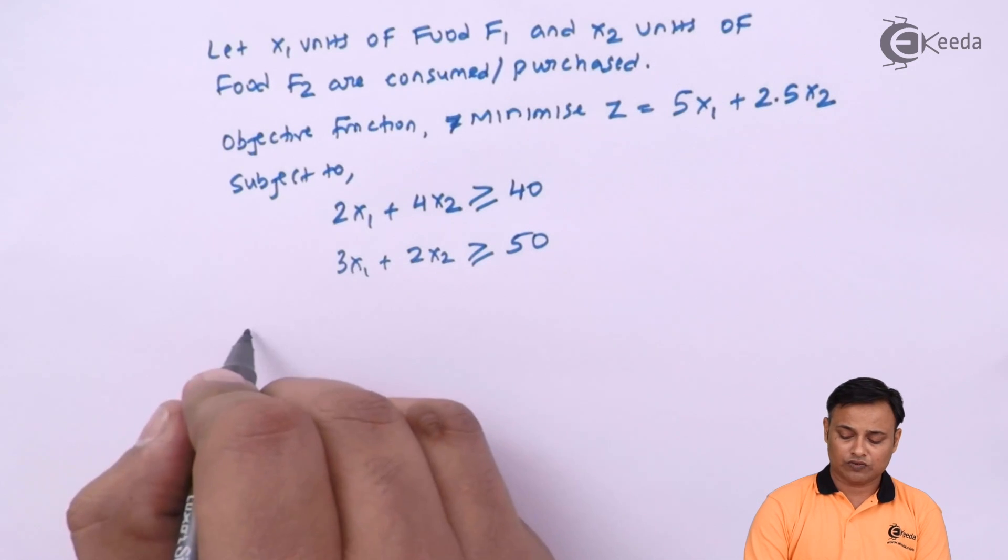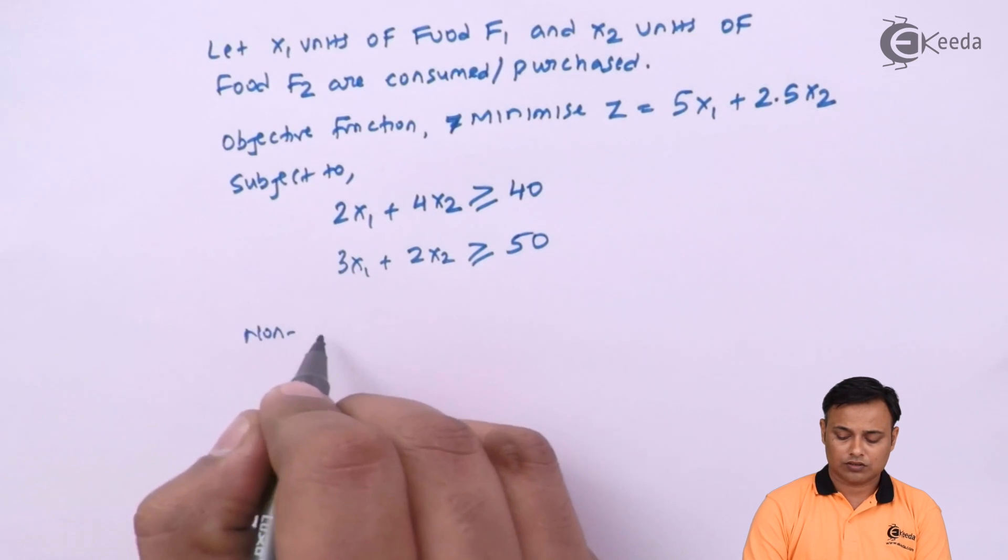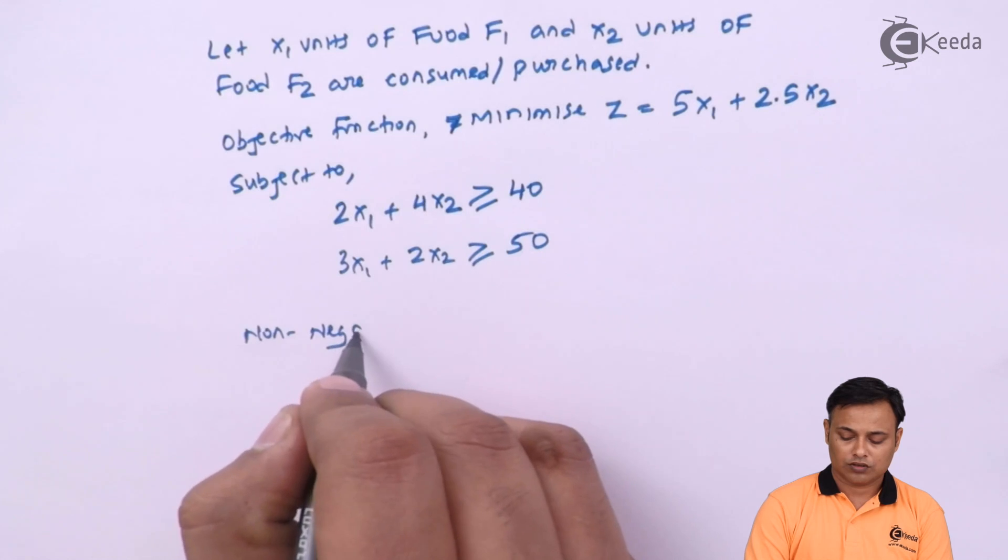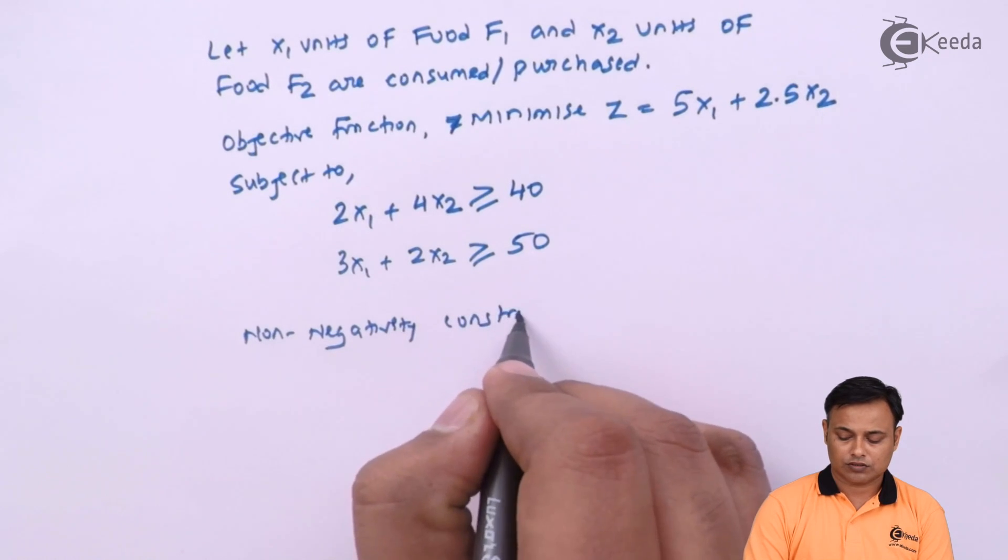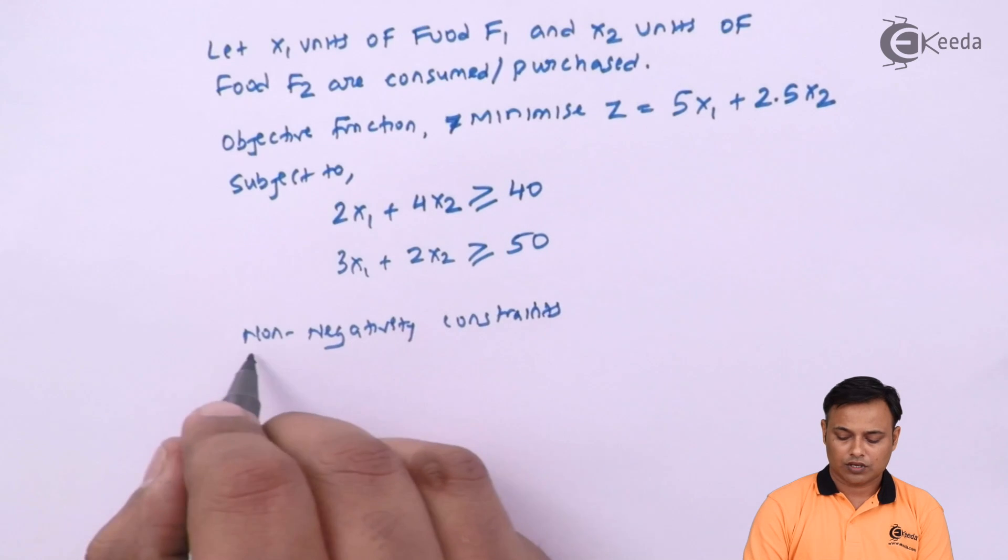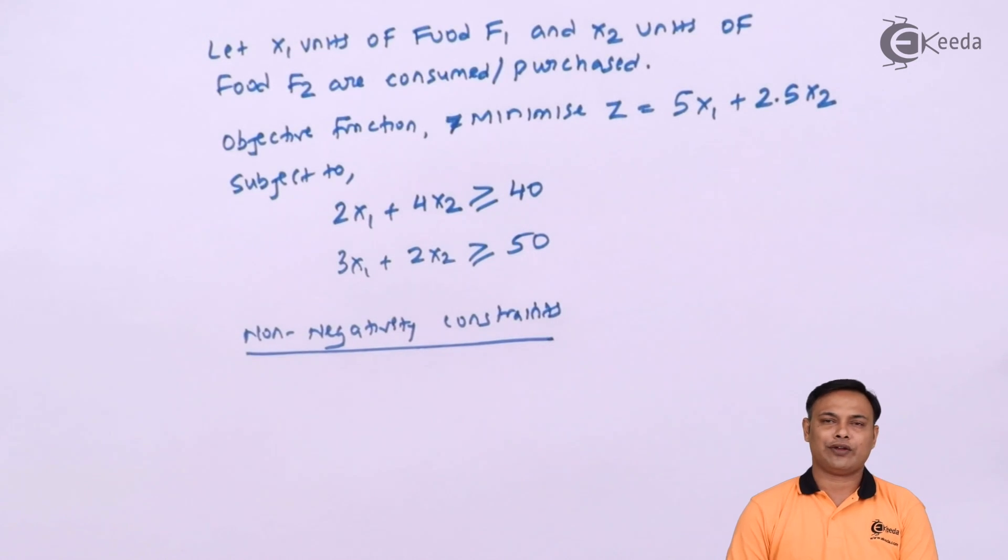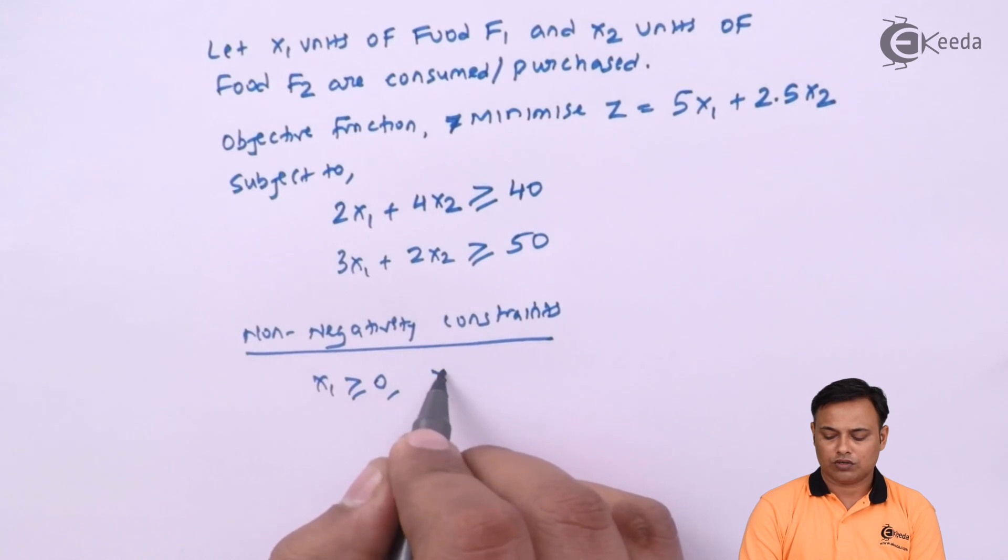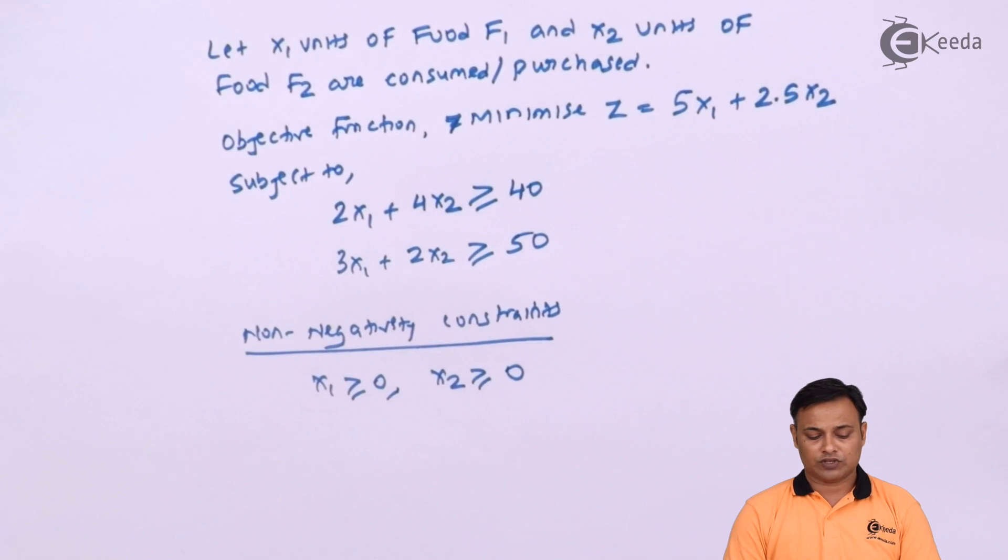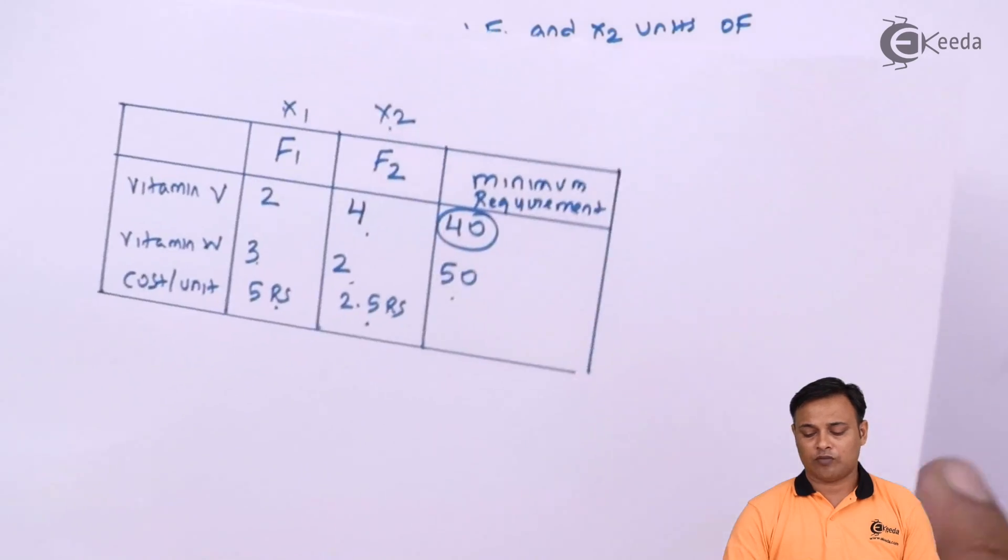And then as usual, we note down the non-negativity constraints. Under non-negativity constraints, we will write x1 more than or equal to 0, x2 more than or equal to 0. So, with this, we just formulated the problem.